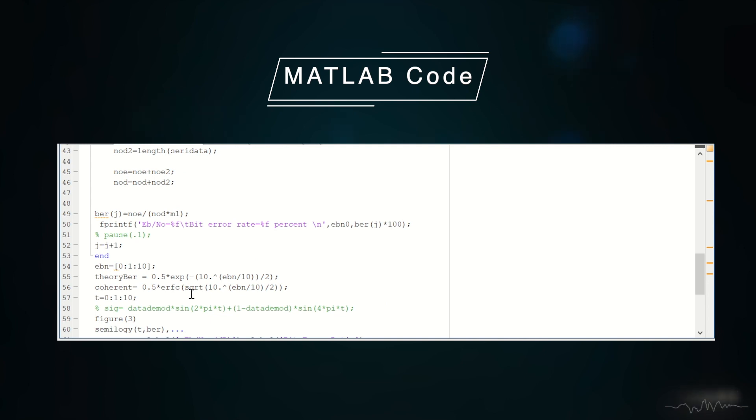For each of the SNR value we find the number of errors and compute the percentage. Theoretically there's a formula for calculating the probability of error of the non-coherent as well as coherent detection. These are the formulas.